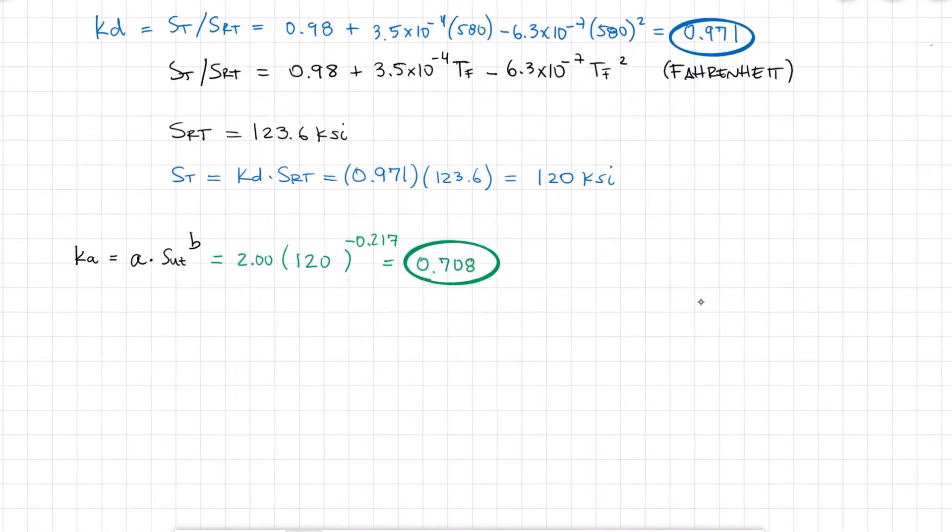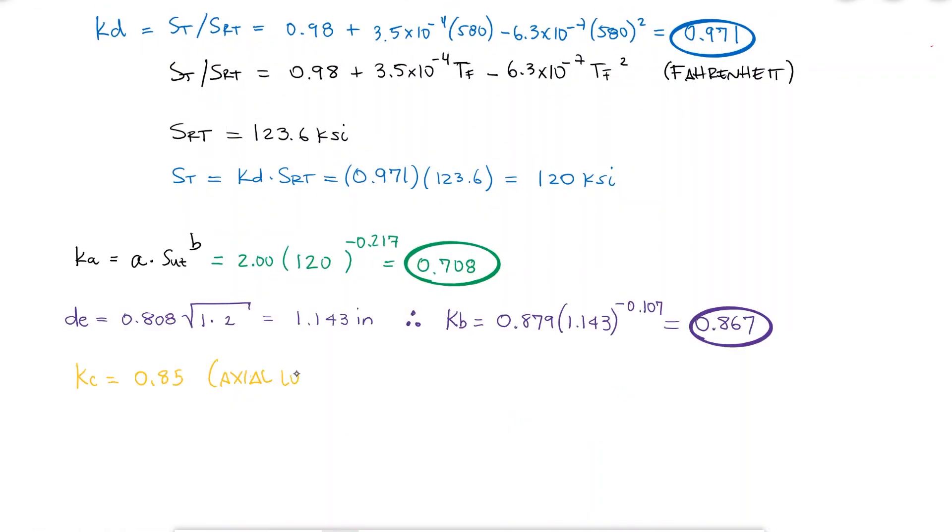Putting all these values together, I find that the corrected endurance limit, which is the product of KA, KB, KC, KE, and the initial estimate SE prime, is equal to 25.5 KSI. This value can be located on the S-N diagram.